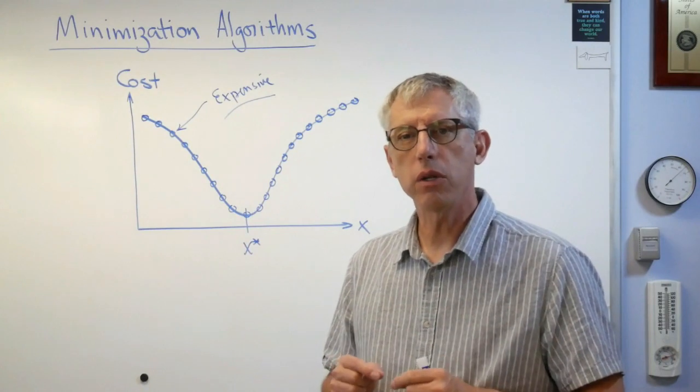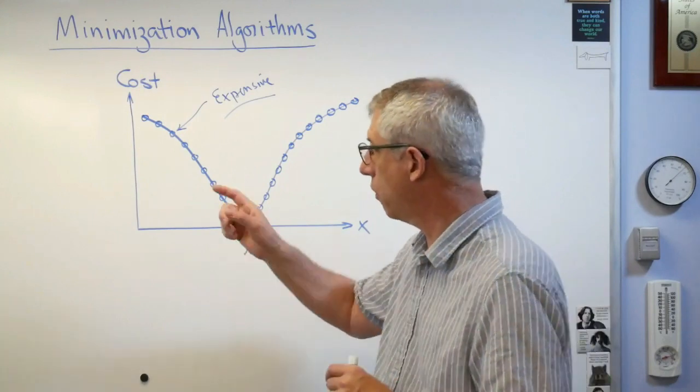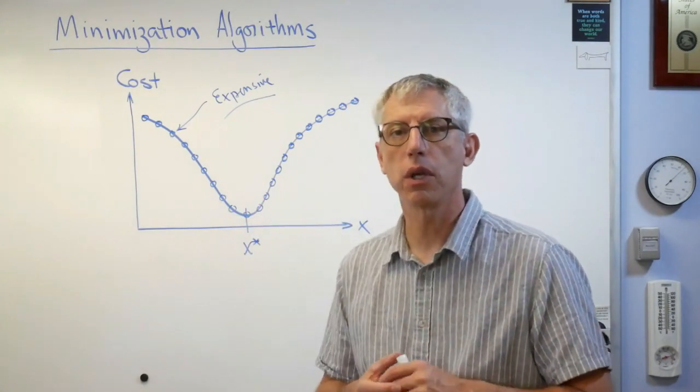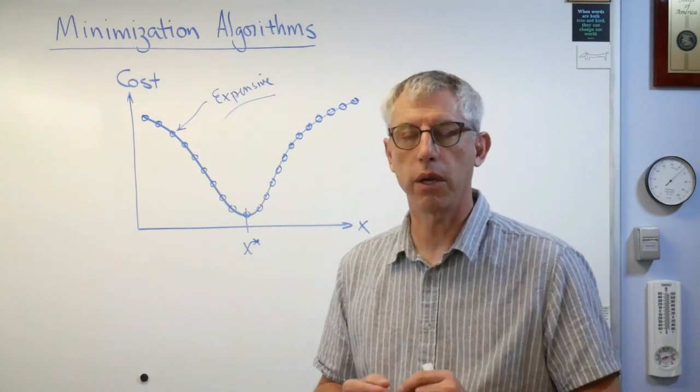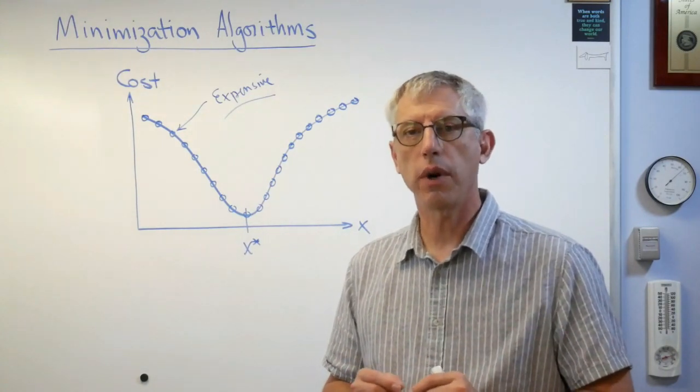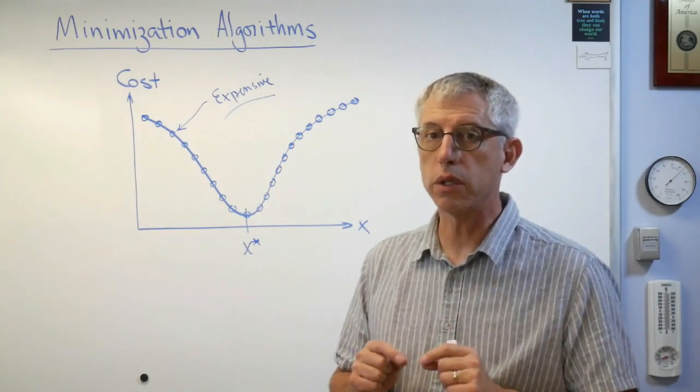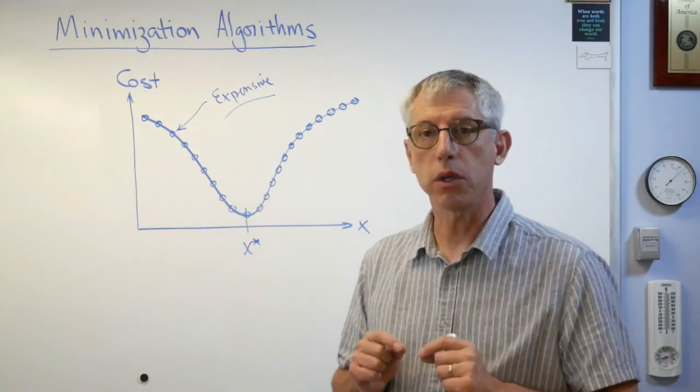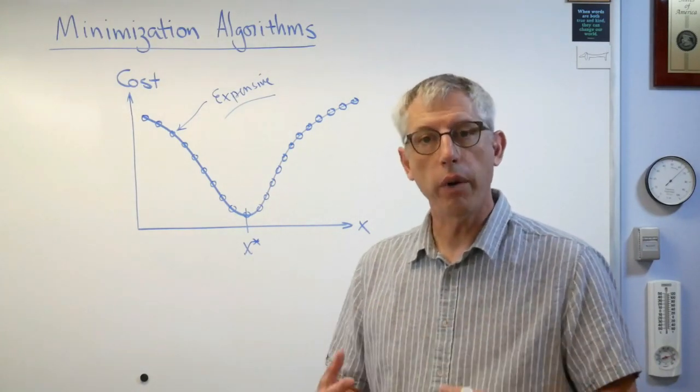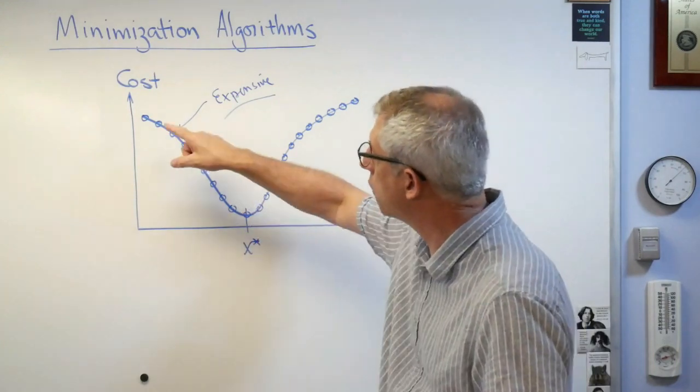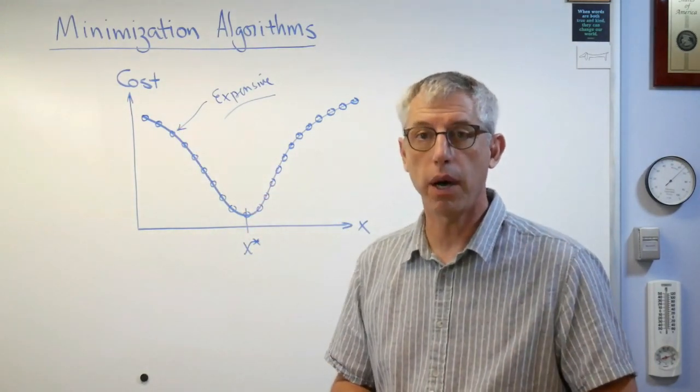So what we're trying to do with an algorithm is we're trying to find the minimum point on a curve or on a multi-dimensional surface using the smallest number of objective function evaluations. We are trying to find the minimum with the smallest number of calculations with the shortest computer time because computer time is expensive, either in just raw time or in money. So the whole rest of the class, we're going to be trying to find minima using as few calculations as possible.